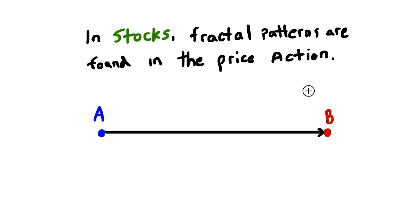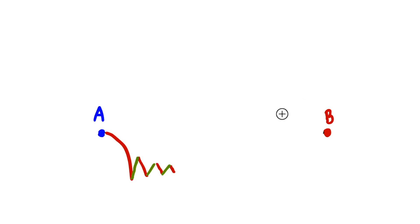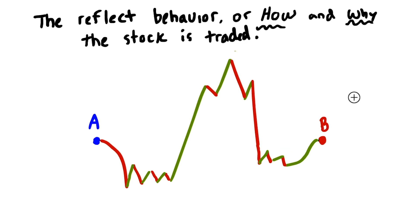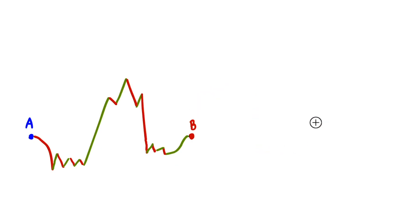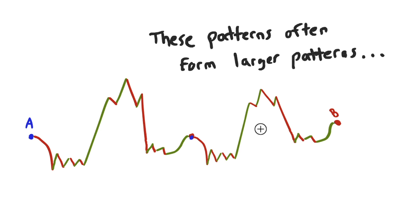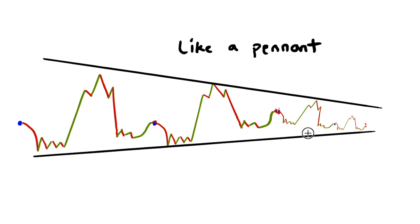Example. So in stocks, fractal patterns are found in just price action. For example, some typical price action you might see in a stock. This reflects behavior—how and why the stock is traded, what's going on on each of these moves. And these patterns often form larger patterns like a pennant. This is something that a lot of us have seen and identified.